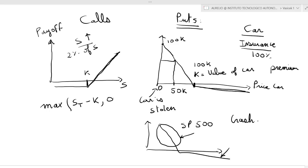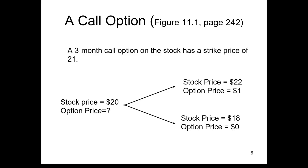The call option payoff depends on K and S(T), and is the maximum between S(T) minus K — predetermined at inception — or zero. In our example, we have a three-month call option with a strike of 21. The payoff is max(S(T) - 21, 0). In the upper scenario where the stock is 22, the option price is 1. In the down scenario, since 18 is lower than 21, the option price is zero. The question is: given these values at T equals three months, what is the option price today?